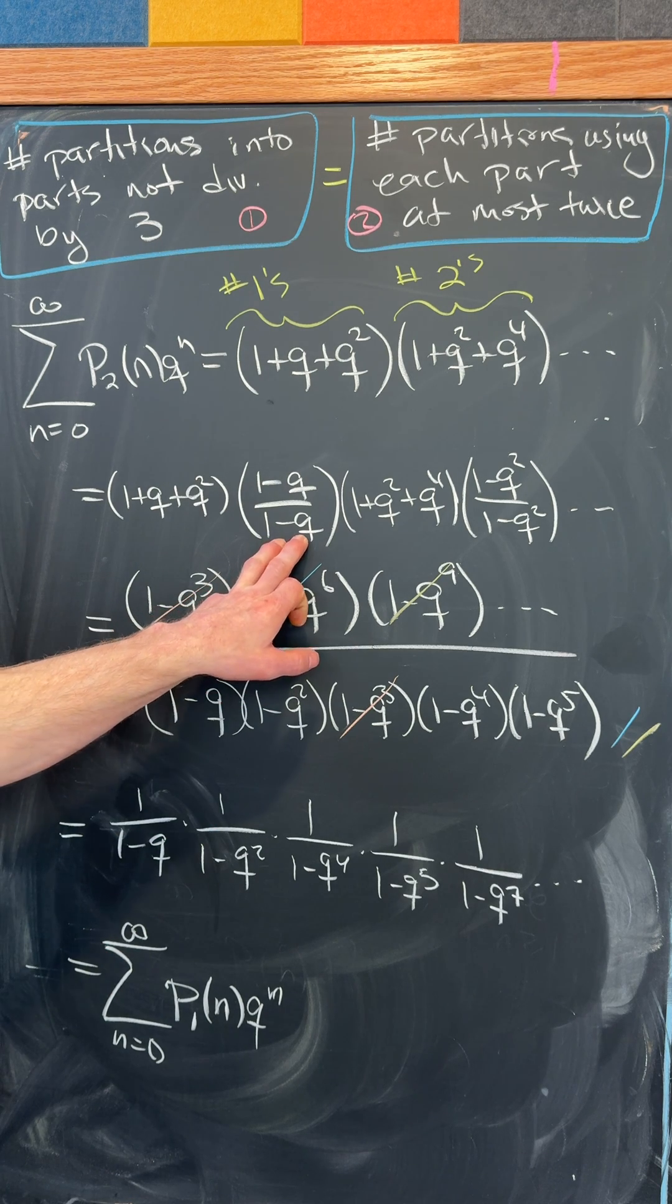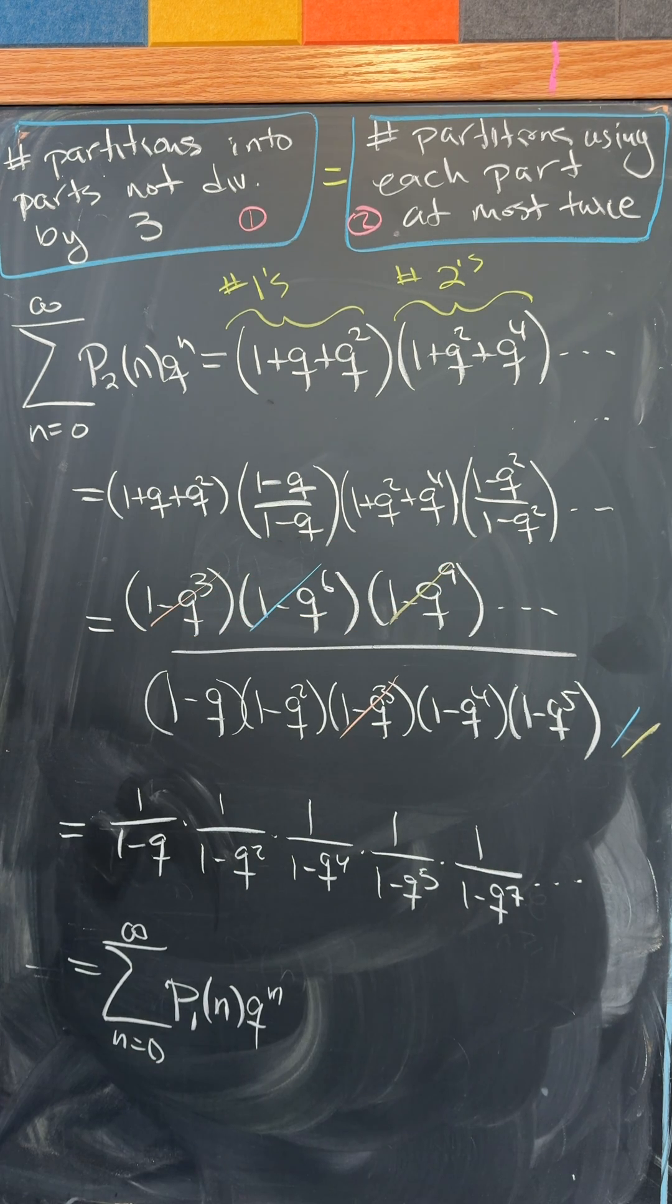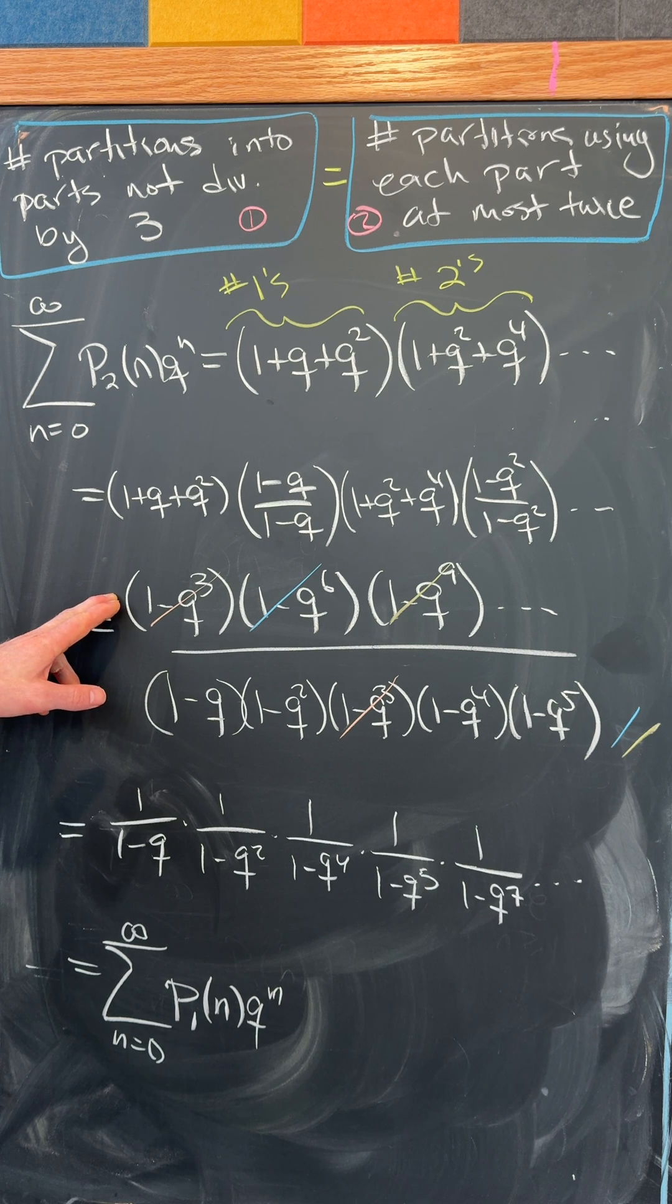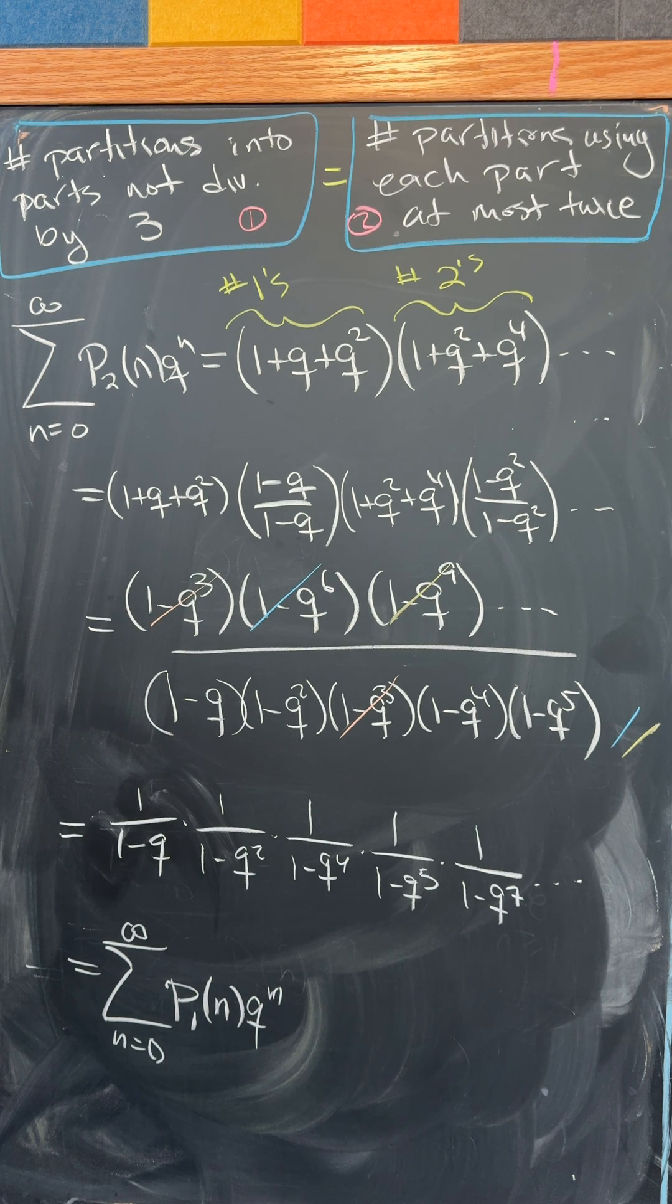But now we're going to multiply it by a bunch of versions of 1 and then expand everything out. Observe that here we get the difference of cubes in the numerator and here we get the whole product of 1 minus q to the n in the denominator.